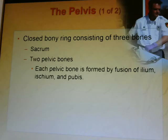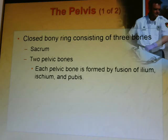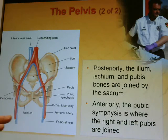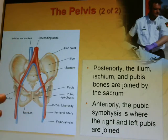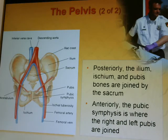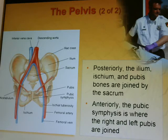The pelvis is a closed bony ring consisting of three bones: the sacrum and two pelvic bones. Each pelvic bone is formed by fusion of the ilium, ischium, and pubis. Posteriorly, the ilium and ischium are joined at the sacrum; anteriorly, the pubic symphysis is where the right and left pubis are joined together.